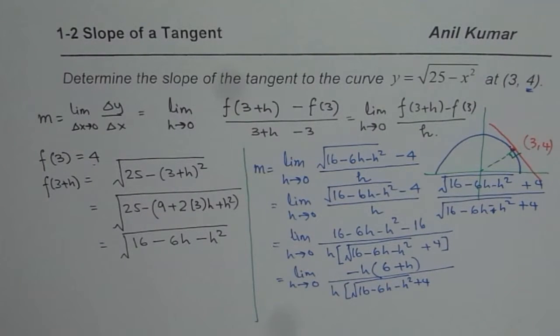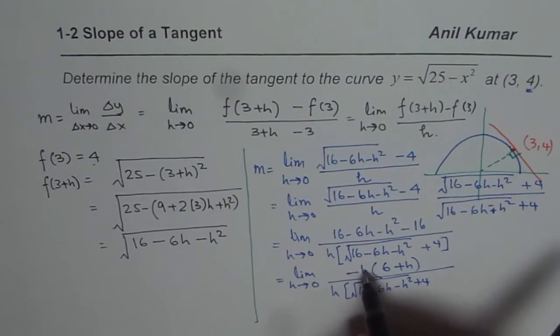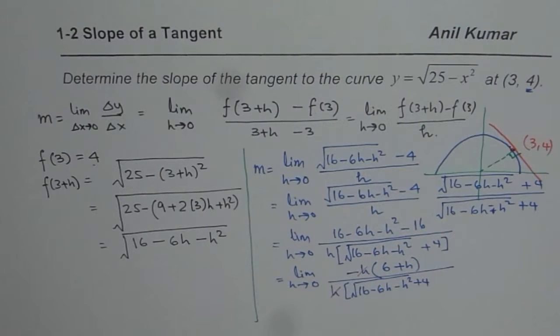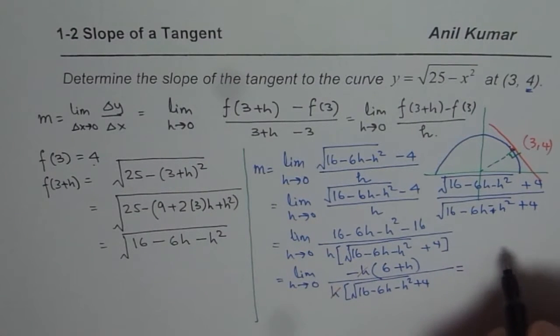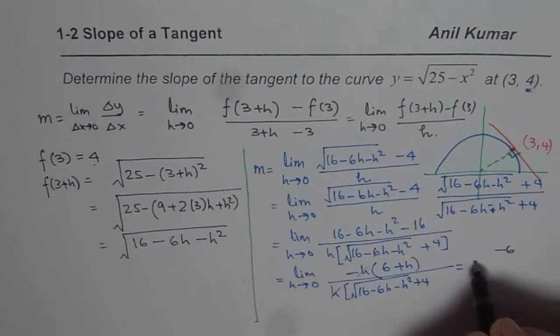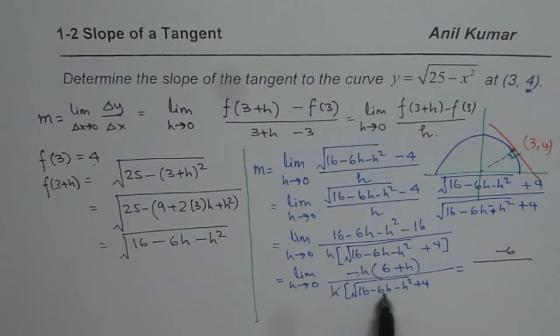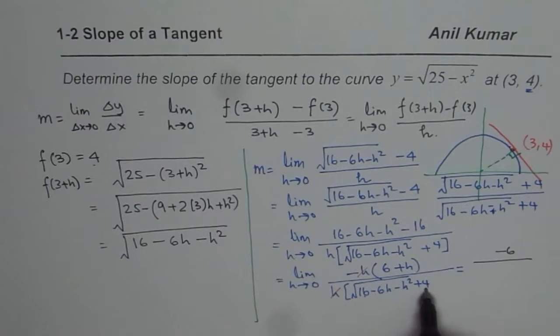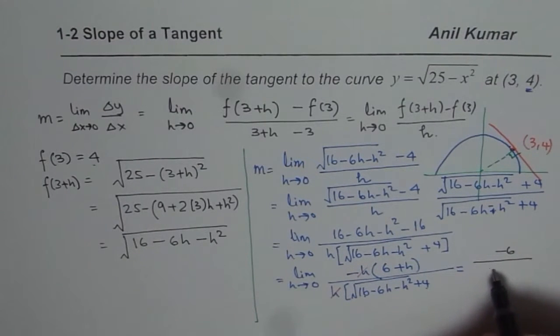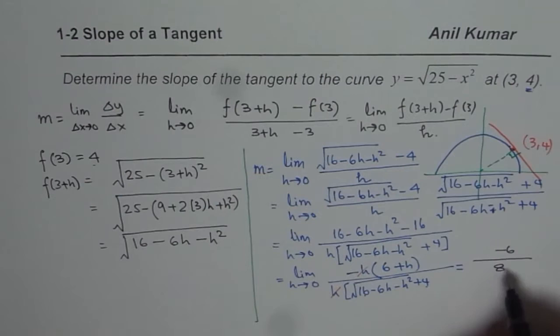Now h and h can be cancelled. And we can now substitute h equals 0. Once we do that, what do we get? We get minus 6 in the numerator divided by, now here these two terms will be 0, square root of 16 is 4. So we get 4 plus 4. So 4 plus 4 is 8. And that's the answer.